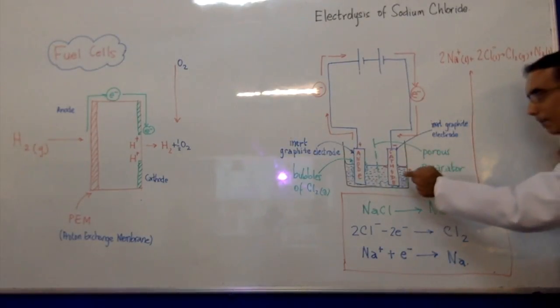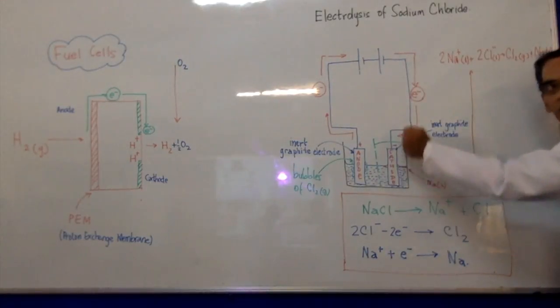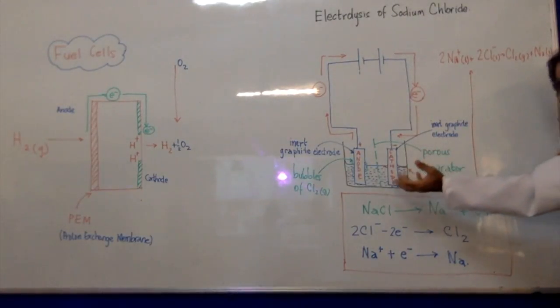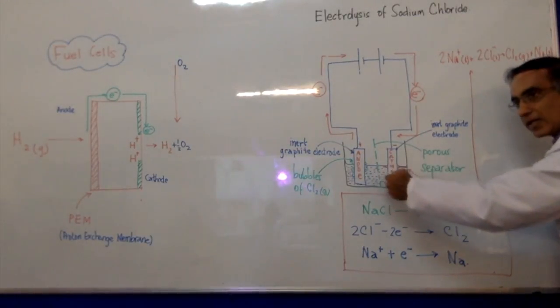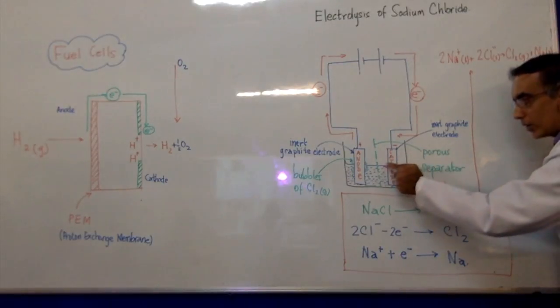Then on this side now, with electrons moving towards this side, this side becomes negative. Sodium ions from solution, they don't become solid sodium, but what they do is they collect around here as liquid sodium. So you have liquid sodium collecting at the negative electrode, which is the cathode.